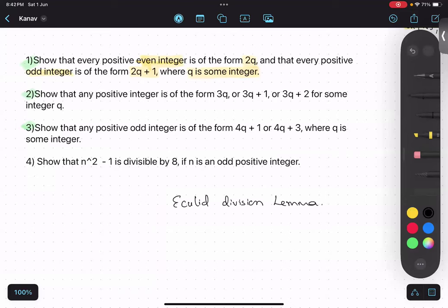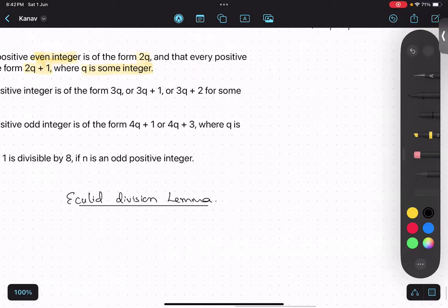So Euclid Division Lemma is an algorithm. If I divide two numbers, let's say 10 divided by 4, you will get 2 over here, 8, and 2 as the remainder.